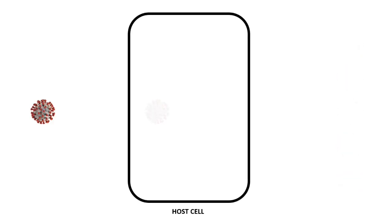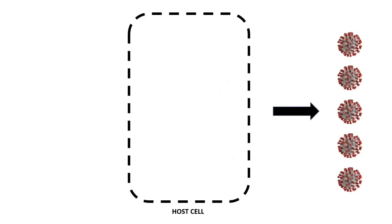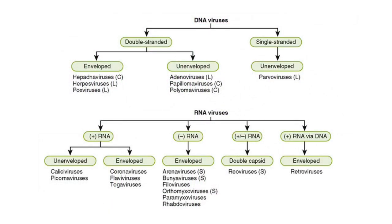The goal of the virus is to replicate, but it cannot replicate by itself. Viruses must infect cells and use components of the host cell to make copies of themselves, and they often kill the host cell in the process and cause damage to the host organism. There are different types of viruses. Based on structure, they can be classified into helical, polyhedral, spherical, and complex viruses. Based on the genetic material inside them, they can also be classified as DNA viruses and RNA viruses.